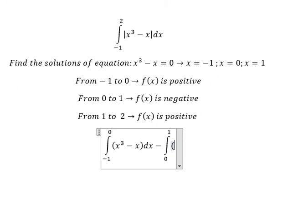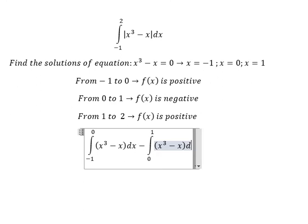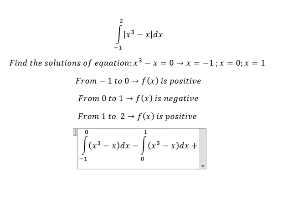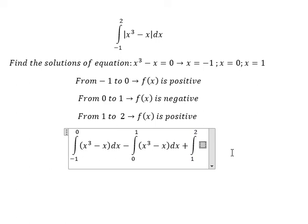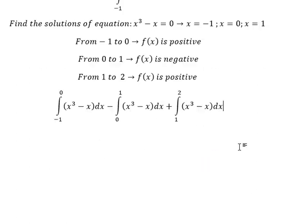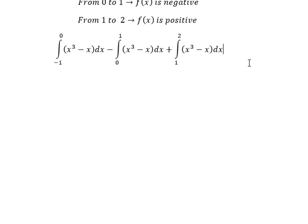So we can get the final answer. The integral of x to the power of 3, we get x to the power of 4 over 4 and x squared over 2. We have negative one and zero as the bounds in here.